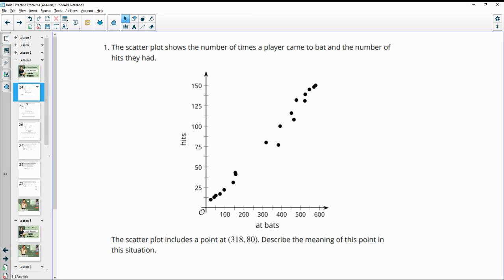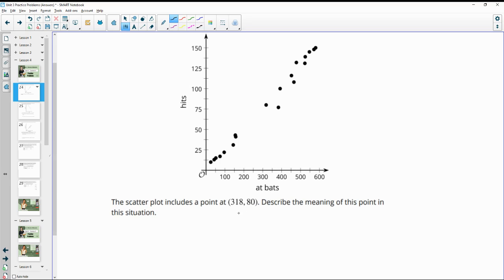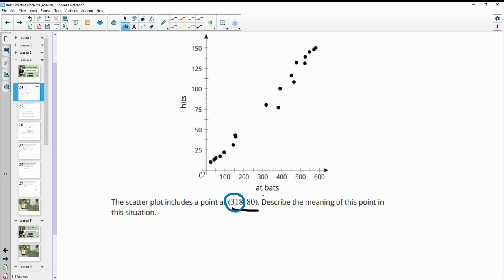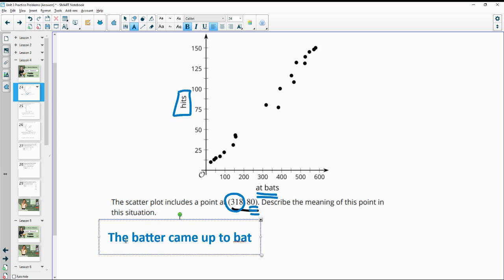Number one gives us a scatter plot that shows the number of times a player came to bat and the number of hits they had. The scatter plot includes the point (318, 80). Describe the meaning of this point in this situation. We know that the x value, or the first value, is the at bats, and then the second value, the y value, is the number of hits. So this one would suggest that the batter came up to bat 318 times and got 80 hits.